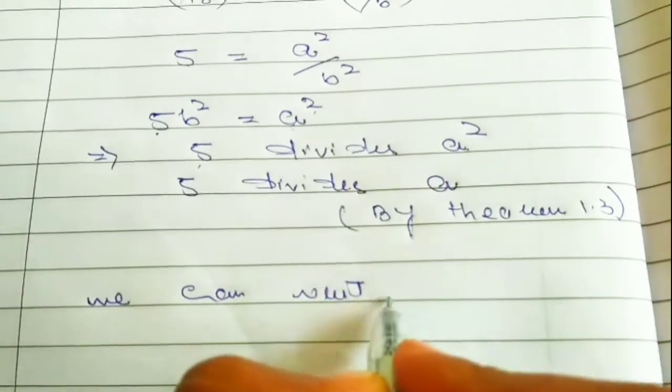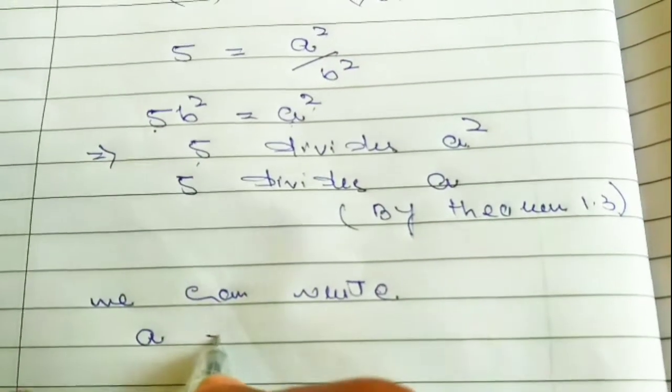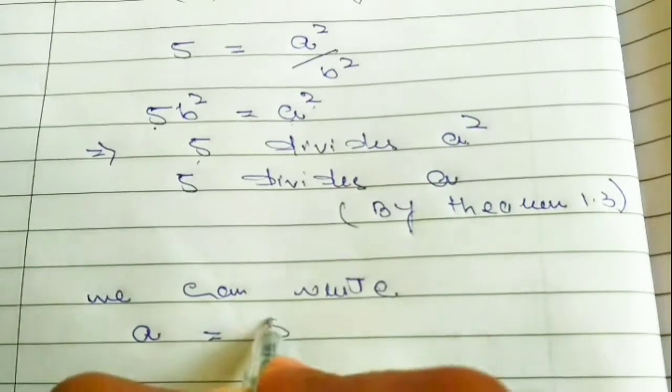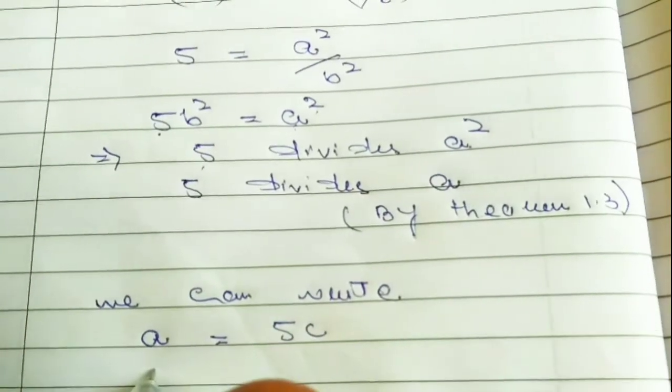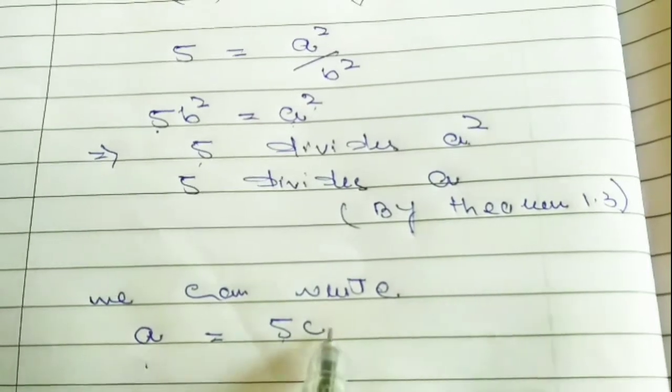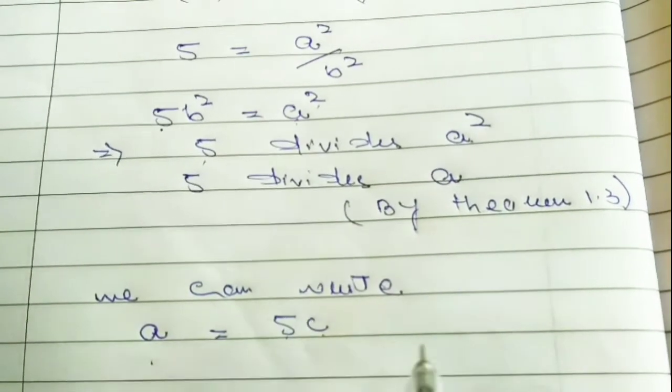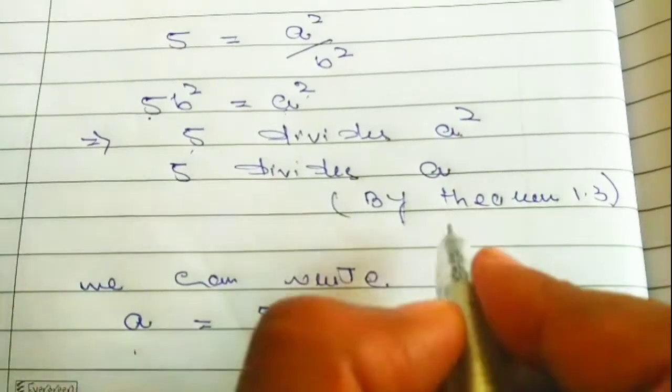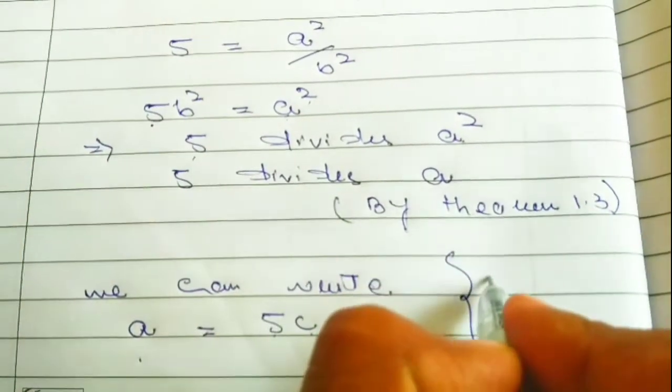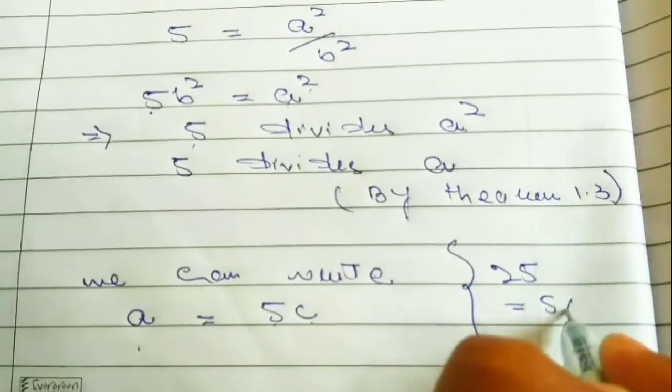We can write A equal to 5C. A here is 5 multiply C. For example, if we have a number like 25, it can be written as 5 multiply 5.